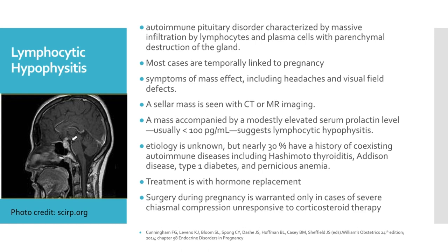Lastly, we discuss lymphocytic hypophysitis. This is an autoimmune pituitary disorder characterized by massive infiltration by lymphocytes and plasma cells with parenchymal destruction of the gland. Most cases are temporarily linked to pregnancy. This condition usually manifests with symptoms of mass effect, including headaches and visual field defects, and usually there is a sellar mass seen with CT scan or MRI. A mass accompanied by a modestly elevated serum prolactin level, usually less than 100 picograms per ml, is suggestive of lymphocytic hypophysitis. The etiology of this condition is unknown, but nearly 30% have a history of coexisting autoimmune diseases, such as Hashimoto's thyroiditis, Addison's disease, type 1 diabetes, and pernicious anemia. Treatment is with hormone replacement, and surgery during pregnancy is warranted only in cases of severe chiasmal compression unresponsive to corticosteroid therapy.